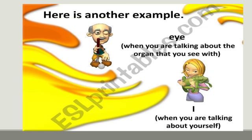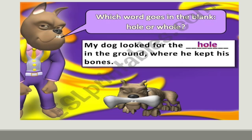Here is another example: 'eye' and 'I.' Both are very different in spellings and meanings, but the sounds are the same. 'Eye' refers to the organ we see with, and 'I' is used when talking about yourself — 'I'm doing this work,' 'I'm playing football.' So homophones are words having the same sound but different spelling and meaning.